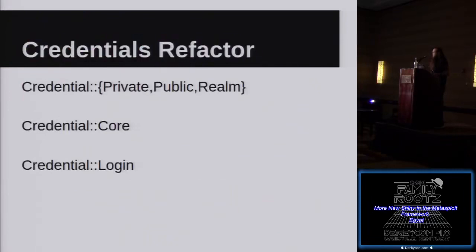Credentials went through a major refactor. It used to be just usernames and passwords, all one simple blob, associated with a service but not really anything else. Now we've got a much more granular approach. We have publics, privates, and realms — publics are like usernames, privates are passwords, but also sometimes SSH keys or NTLM hashes because they can be used as passwords. Realms are a domain, a Postgres database — things required for authentication but aren't a username or password.